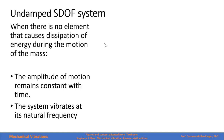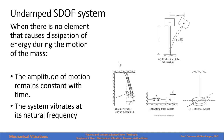We will work first with undamped single degree of freedom systems. In these systems, the amplitude of the motion remains constant with time and the system vibrates at its natural frequency. Let's see some examples.